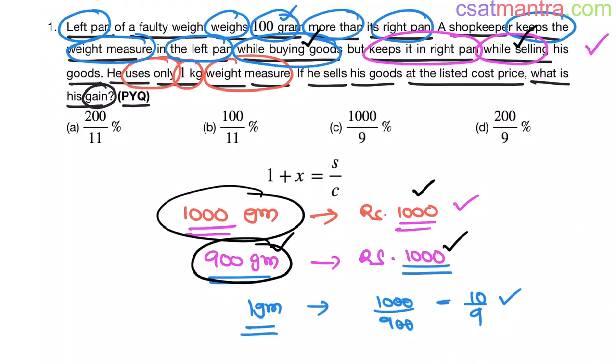So 900 plus 100 is 1000 grams. See, he uses 1 kg weight measure only. Left pan is already 100 grams. So I need to add 900 grams more and I can keep 1 kg weight measure in right pan. Now observe here. He sells his goods at the listed cost price. 1000 rupees is the listed cost price. He is selling at the same price, that is 1000 rupees.